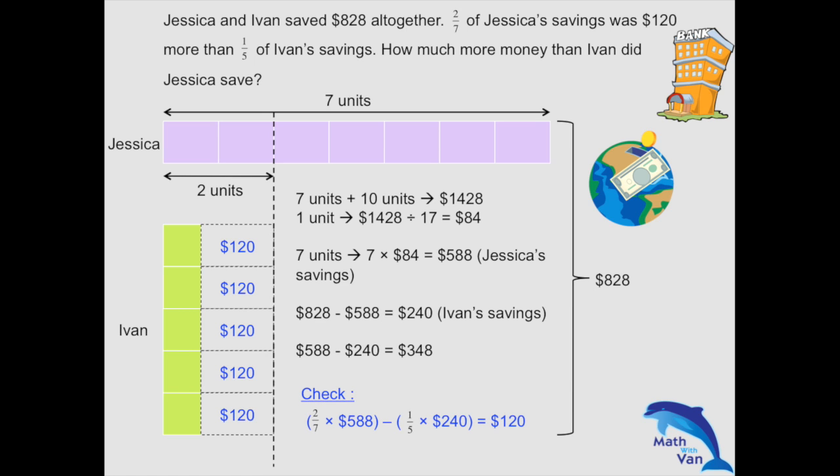Please check your work: by taking 2 out of 7 of $588, then subtracting one-fifth of Ivan's savings, you should get $120. That's the answer. Keep things simple — once you identify the relationship between the two different color blocks, you change all. That's the only way to solve the question given this limited information. I hope you enjoyed the lesson. If you did, please give me a like or subscribe to my channel for more videos. Hope you enjoyed learning math and have a nice day. Goodbye!